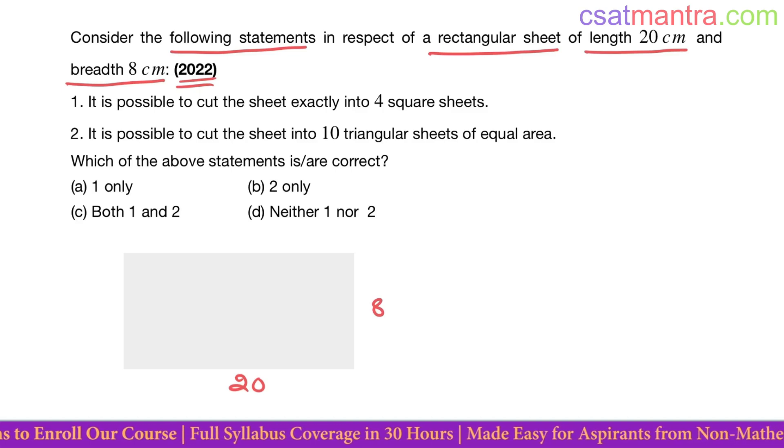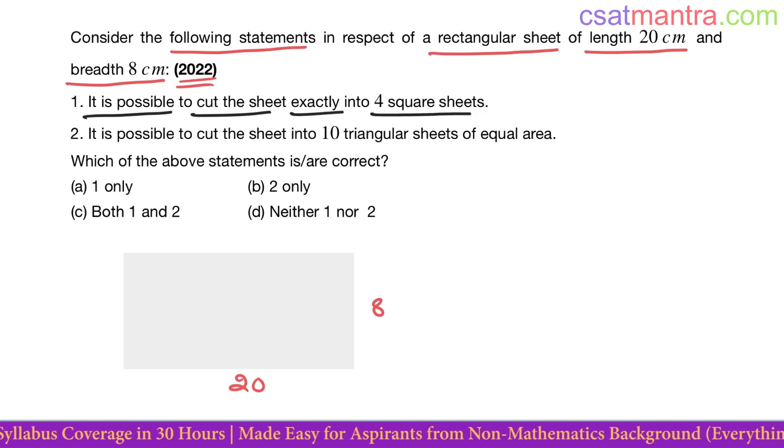Now it is possible to cut the sheet exactly into four square sheets. Okay, four squares. All the squares need not have same area, it's just the piece would be square, my friends, like that. Four squares we need to have.